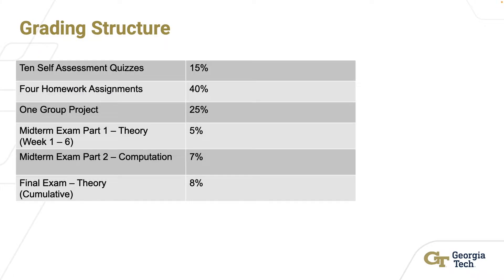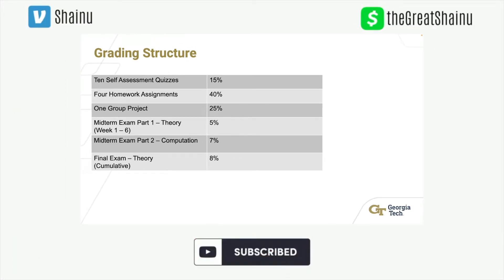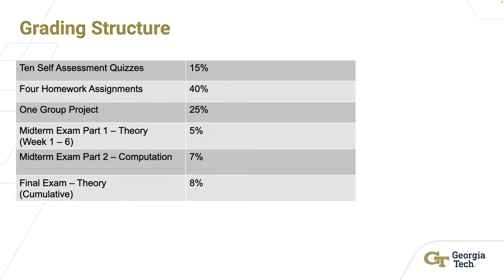This is the grading structure. We have 10 self-assessment quizzes, which are worth 15%. Four homework assignments, which are worth 40%. For the homework, you have a coding component and also a quiz. The quiz is actually open book and you're able to find answers fairly easily from lecture transcripts or the PowerPoint slides.